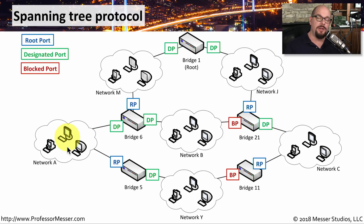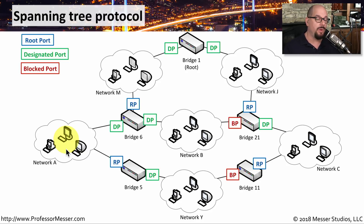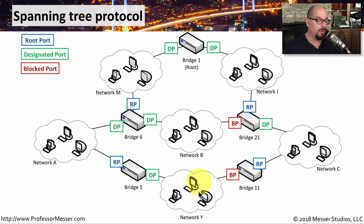Because of this configuration built automatically by Spanning Tree, we can communicate between all of these different networks without the worry of having any loops. This does mean that some communication may take a longer path than expected. For example, to go from network Y to network C, we can't go through bridge 11 because Spanning Tree has blocked one of the ports between those two networks. Instead, network Y would have to go to network A, then network M, then network J, and then network C to finally complete that communication.